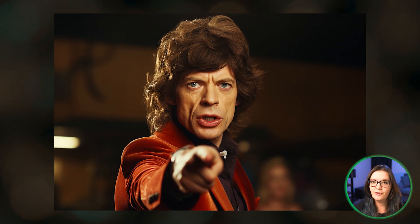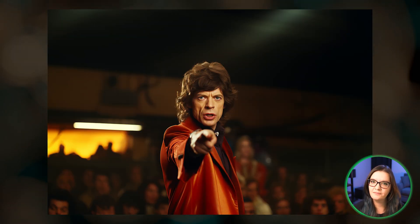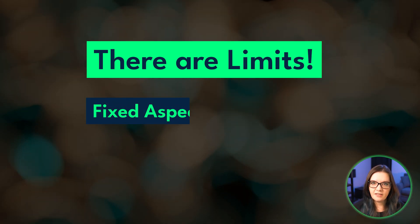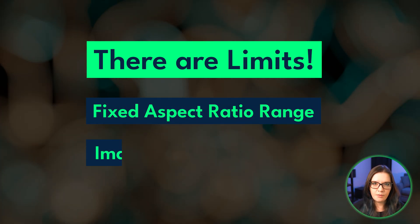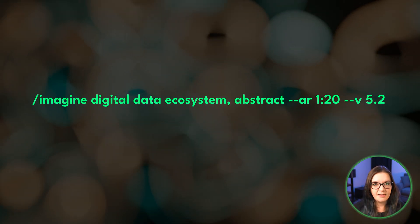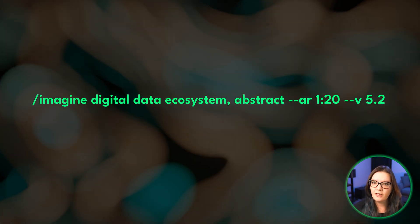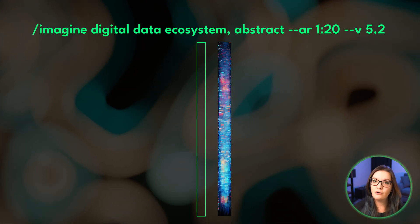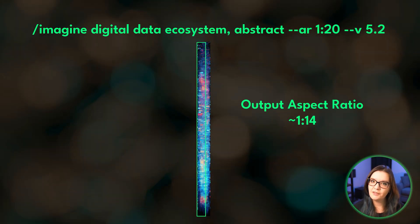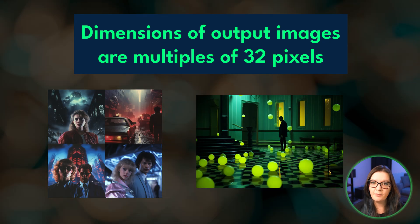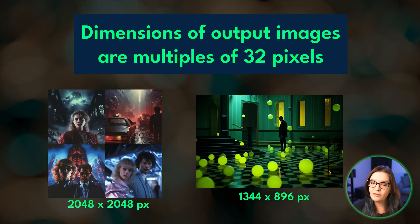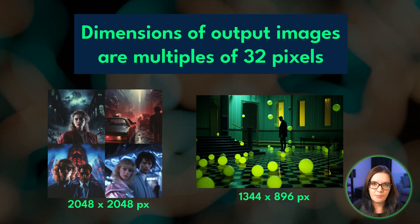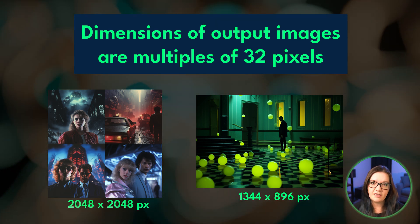While you can ask Midjourney to create images with any aspect ratio, you can't always get what you want. Each Midjourney model has a fixed range of aspect ratios and image resolution constraints. For example, if you ask Midjourney V5.2 for an image with a 1 to 20 aspect ratio, you'll actually get an image with an aspect ratio closer to 1 to 14 — 9 to 128 to be exact. Also, the side length of any image grid or upscaled image is always a multiple of 32 pixels. These are just two examples of constraints that affect the final aspect ratio.